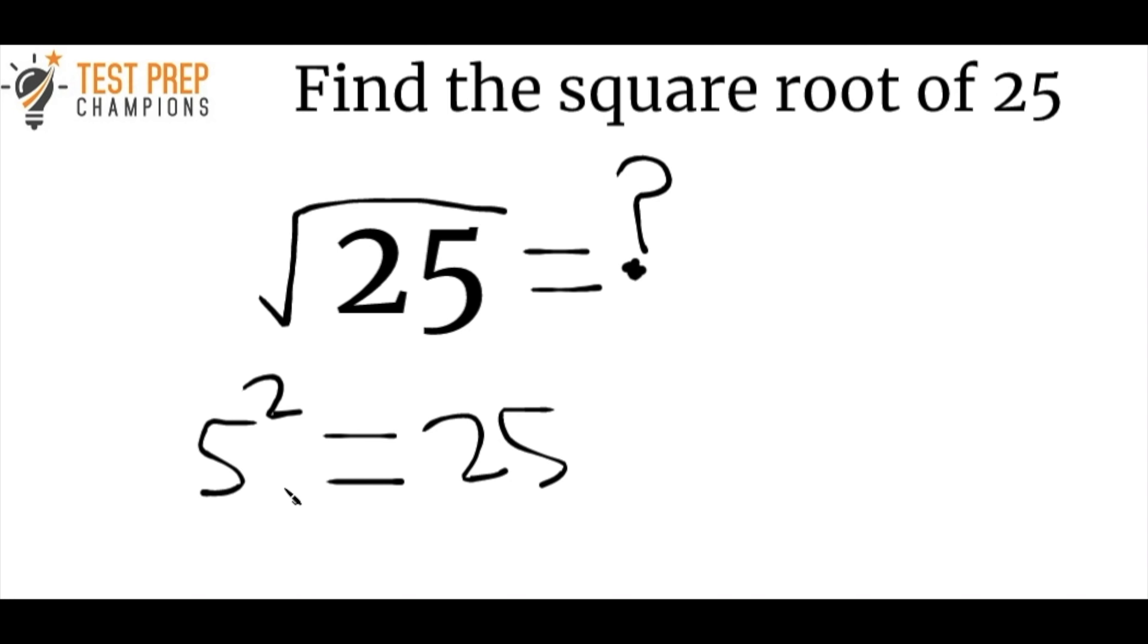So from this we know that 5 multiplied by itself is going to be 25 and that's actually going to be the square root. So if we take that square root of 25 it gets us back to 5. So again to find the square root just note that the square root is a number that's equal to the number in the bracket when it's multiplied by itself.